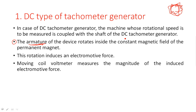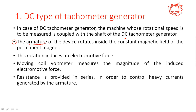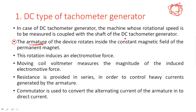A moving coil voltmeter measures the magnitude of the induced EMF. Because of the armature rotation in the permanent magnetic field, some EMF is generated, which is calculated using a moving coil voltmeter. A series resistance is provided to control the heavy currents generated by the armature, acting as a multiplier to limit the maximum current entering the voltmeter.